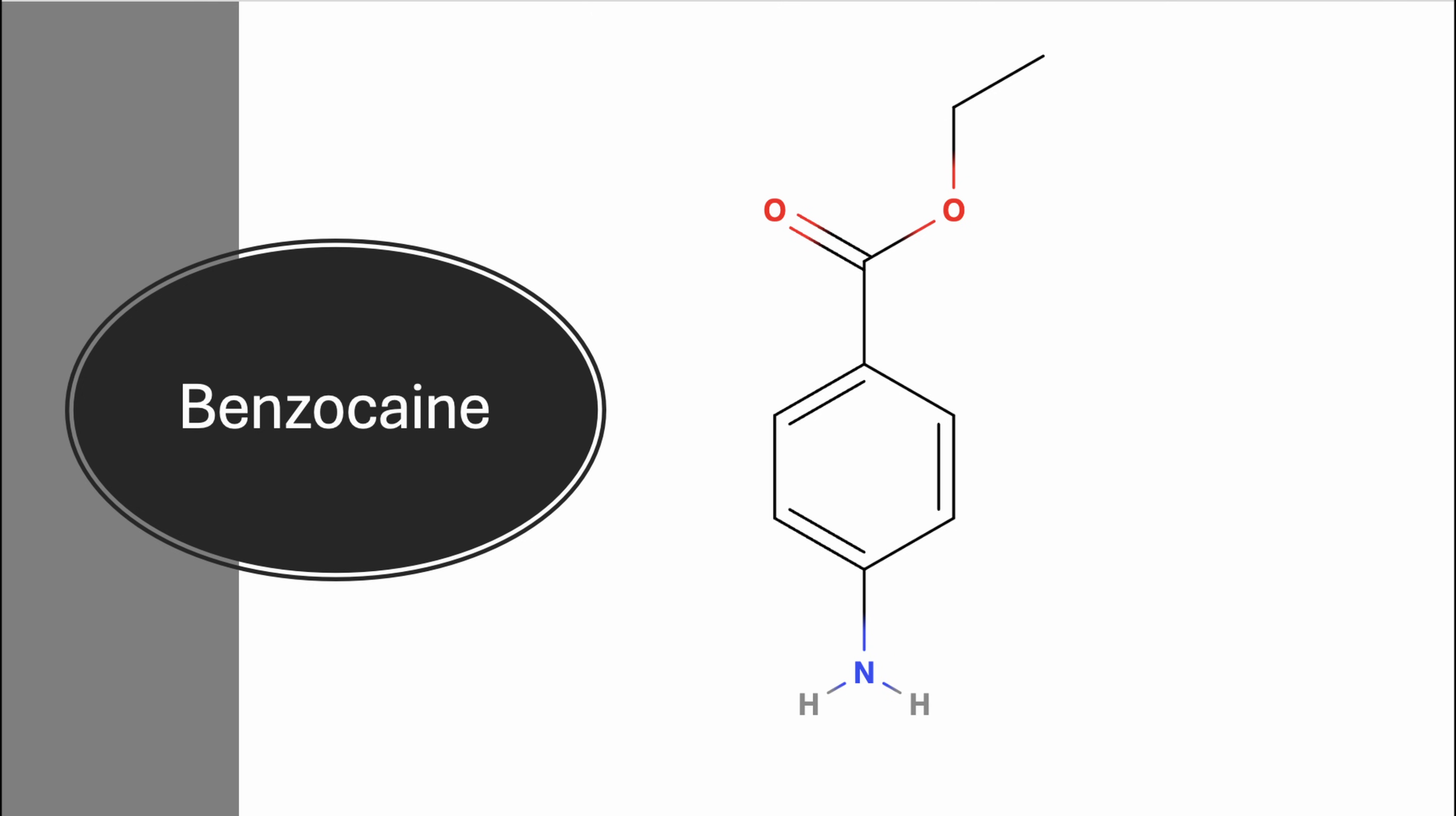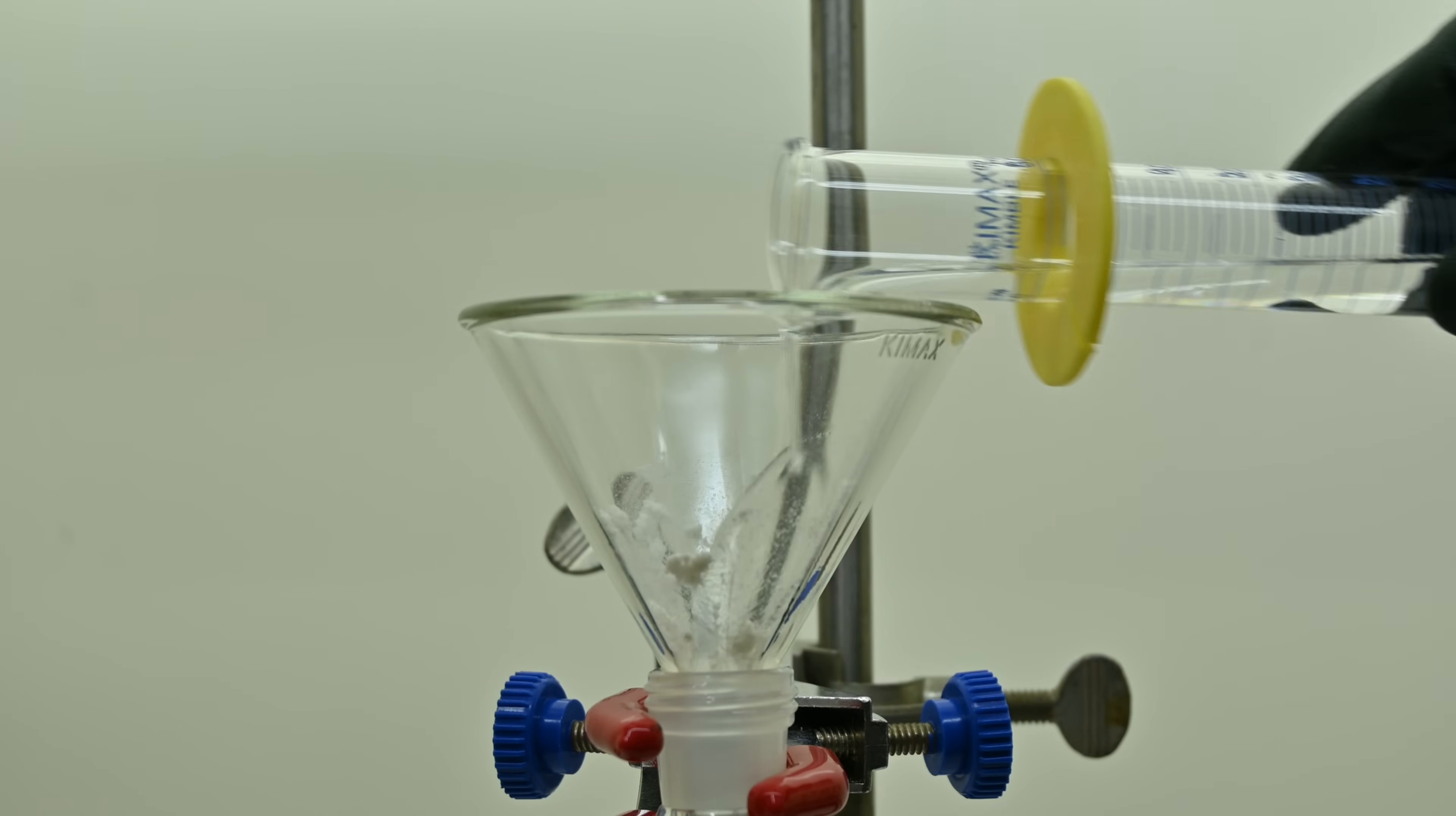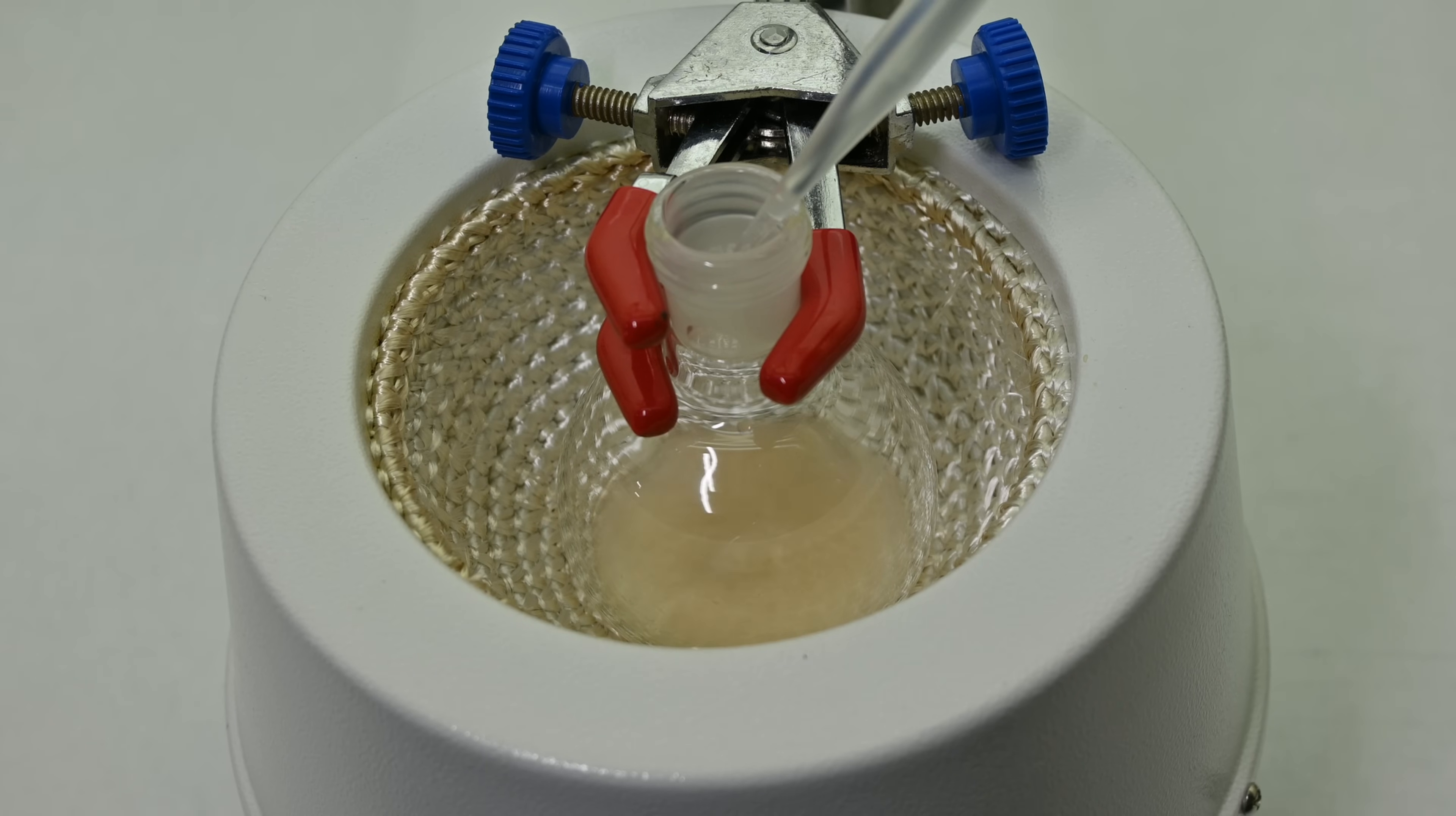Now we're onto the formation of benzocaine. I start by placing 2 grams of p-aminobenzoic acid into a 100 mL round bottom flask. To this I add 20 mL of ethanol, which both acts as the solvent and as the reactant in the esterification process. I then carefully add 1.5 mL of concentrated sulfuric acid to the mixture. Since sulfuric acid is highly corrosive and reacts exothermically with water and alcohol, I add it slowly, drop by drop while stirring the flask. The sulfuric acid catalyzes the Fischer esterification reaction by protonating the carboxylic acid group, making it more electrophilic, and thus more reactive towards ethanol.